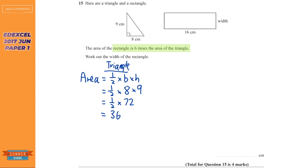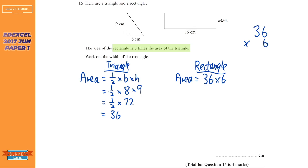Now we need to work out the area of the rectangle. It says the area is six times the area of the triangle, so we're going to do 36 times six. There are loads of different methods — grid method or anything you like. I'm going to use the column method. Six times six is 36, carry the three, six times three is 18 plus three is 21. You can put the carry number wherever you're comfortable — as long as your method is consistently getting you the right answer, that's the main thing.